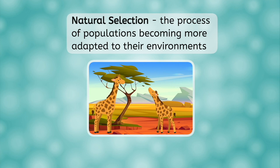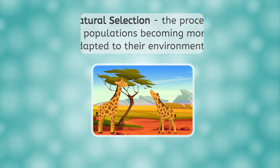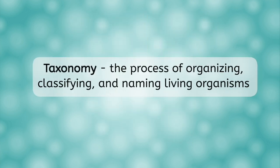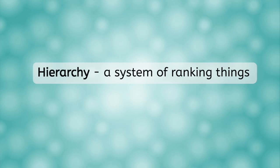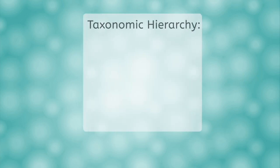Taxonomy is how we name these new species. Taxonomy is defined as the process of organizing, classifying, and naming living organisms. To do this, we use a hierarchy — a system for ranking things. There are eight levels in the taxonomic hierarchy that take us from least to most specific.